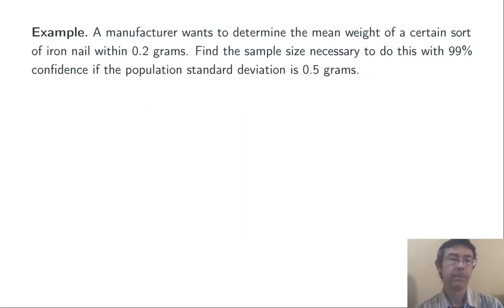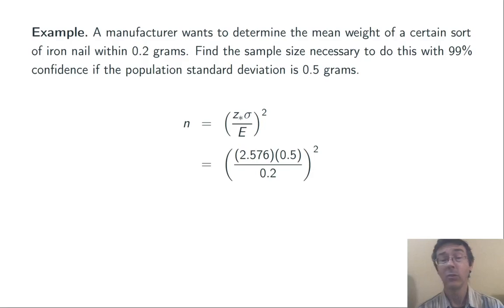One final example. A manufacturer wants to determine the mean weight of a certain sort of iron nail within 0.2 grams. Find the sample size necessary to do this with 99% confidence if the population standard deviation is 0.5 grams. We're using the same formula here. Now, with 99% confidence, we have a critical z-score of 2.576, for example using that table from a few slides ago.